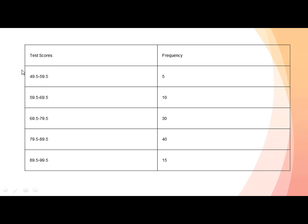From the table: 49.5 to 59.5 marks were obtained by 5 students; 59.5 to 69.5 by 10 students; 79.5 to 89.5 by 40 students; and 89.5 to 99.5 by 15 students. The number of students is the frequency for the marks obtained.